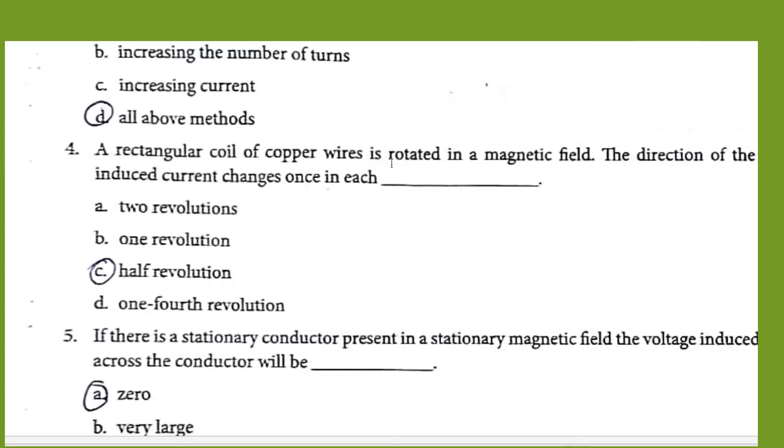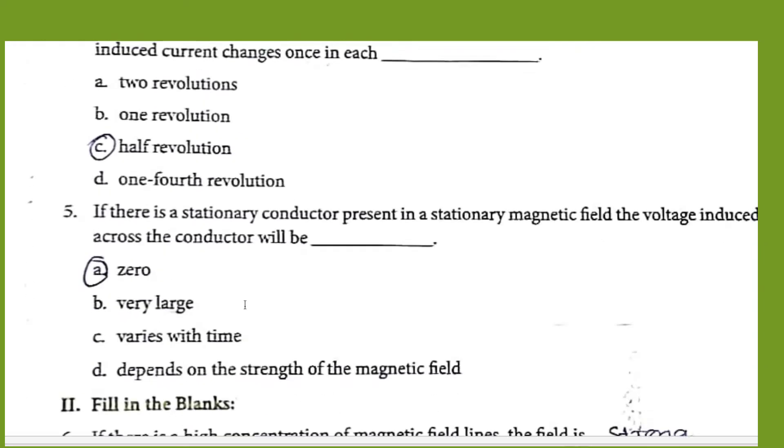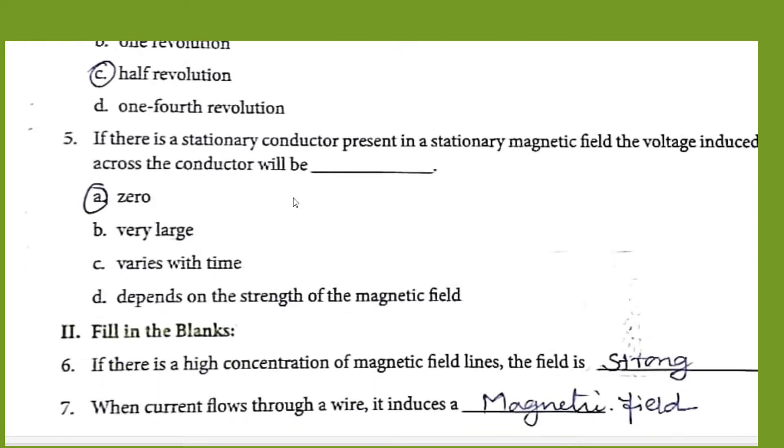A rectangular coil of copper wires rotated in a magnetic field, the direction of induced current changes once in each half revolution. If there is a stationary conductor present in a stationary magnetic field, the voltage induced across the conductor will be zero.